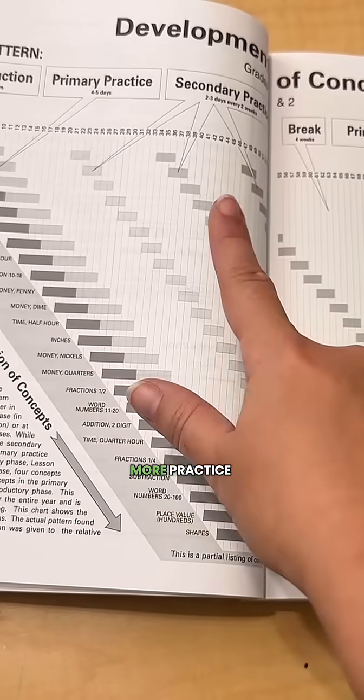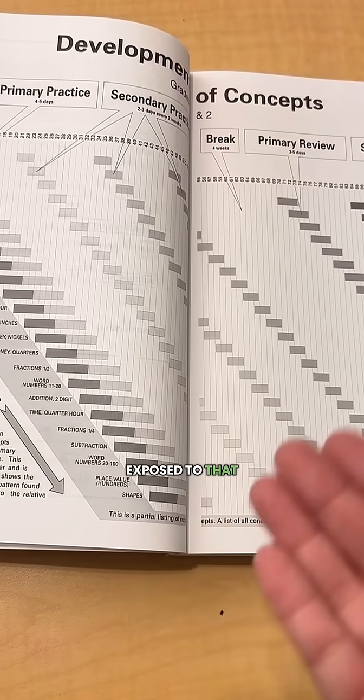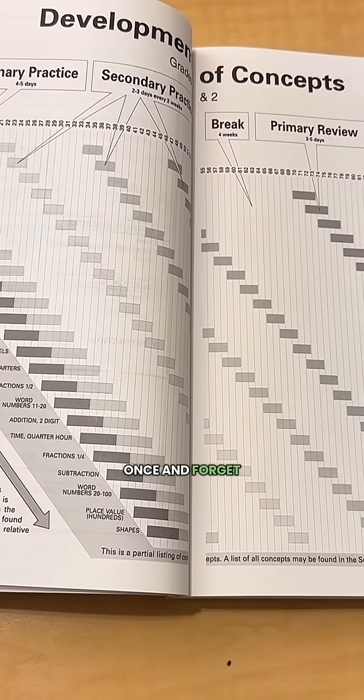an introduction, practice, more practice, a little break, and then they'll do their review. Your child is constantly being exposed to that concept. It's not like they do it once and forget about it.